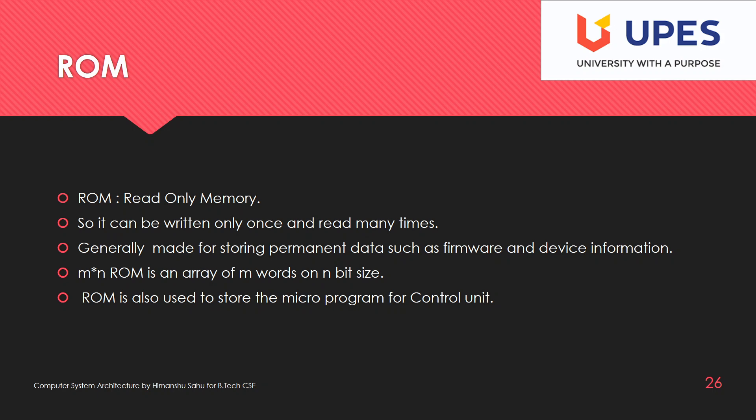ROM is an array of M words of N bit size, similar to RAM. But we don't have any read/write signals — the operation is read only. The control unit uses micro-operations for micro-programs. ROM can be used to store this micro-program because for a particular processor, micro-operations are unique and stored one time.